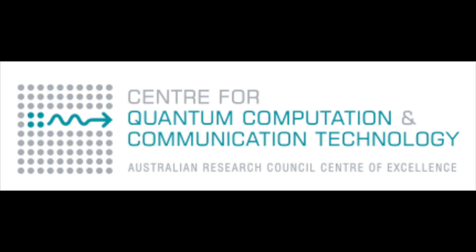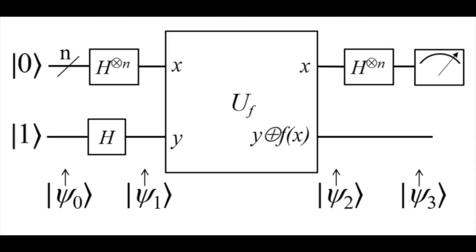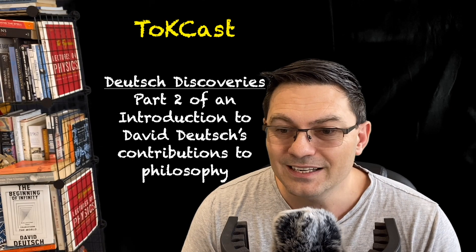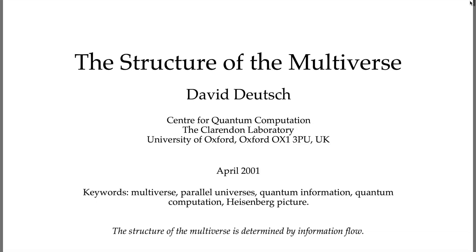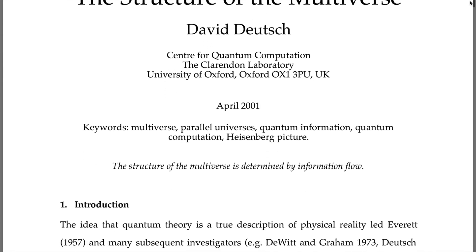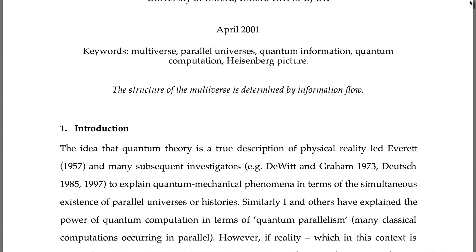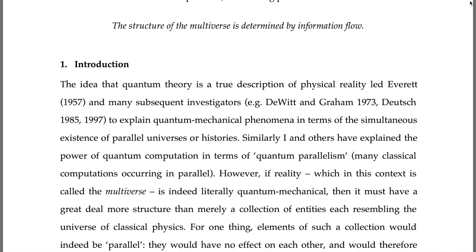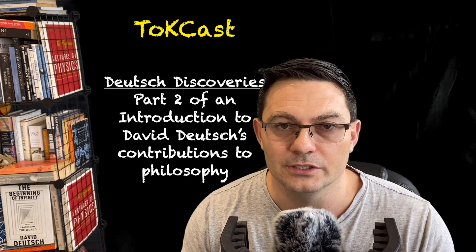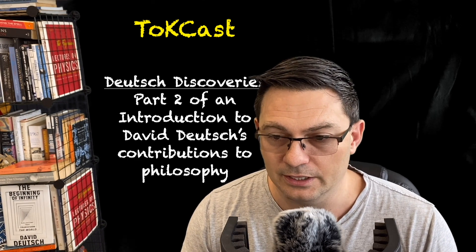David Deutsch invented the theory of quantum computation. He created the first quantum algorithm, Deutsch's algorithm, which could be run on a quantum computer and demonstrate how much more powerful quantum computers are for certain tasks. He discovered key insights into the structure of the multiverse and how to explain concepts like fungibility and entanglement in the context of realistic quantum theory. We could list many scientific contributions that David Deutsch has made to physics and elsewhere.